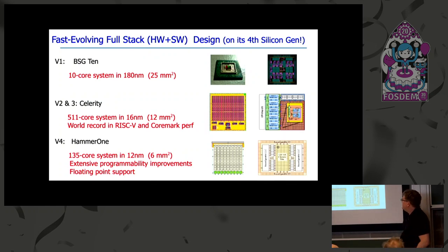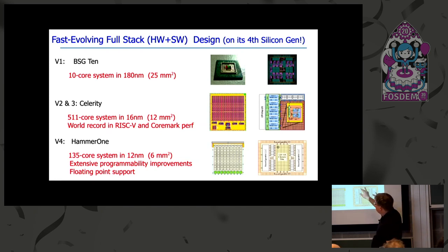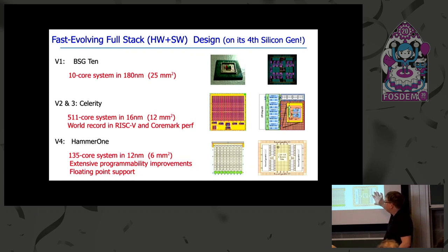We've been through many iterations using a very agile methodology — we do tape-outs, build software on the devices, gain experience, then develop the next generation. We're entering our fifth silicon iteration. We started in 180 nanometer, then did two chips in 16 nanometer with 511 RISC-V cores, which broke the world record for RISC-V performance and also for CoreMark for any ISA. The latest system, Hammer One, has been focusing on programmability improvements to grow the user base and also floating point support.